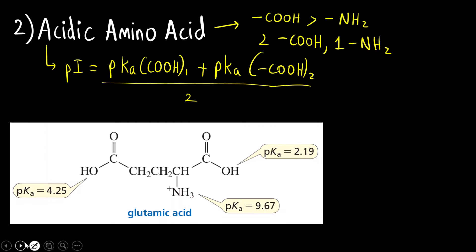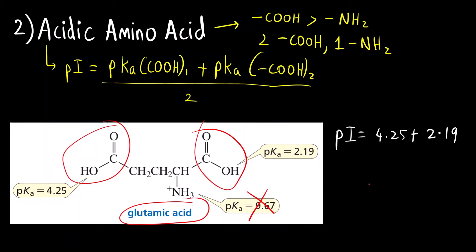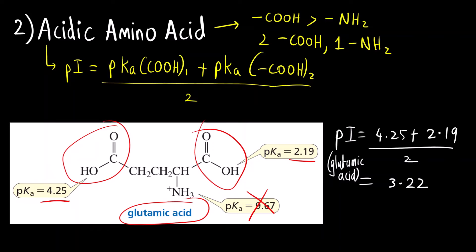Let us understand this with the example of glutamic acid. Glutamic acid has two carboxylic acid groups, so it is an acidic amino acid. The isoelectric point equals pKa of the first carboxylic acid group (4.25) plus pKa of the second carboxylic acid group (2.19), divided by 2. Be very careful not to mistakenly include the pKa of the amine group — that would be incorrect. So: (4.25 + 2.19) / 2 = 3.22. This is the isoelectric point for glutamic acid.